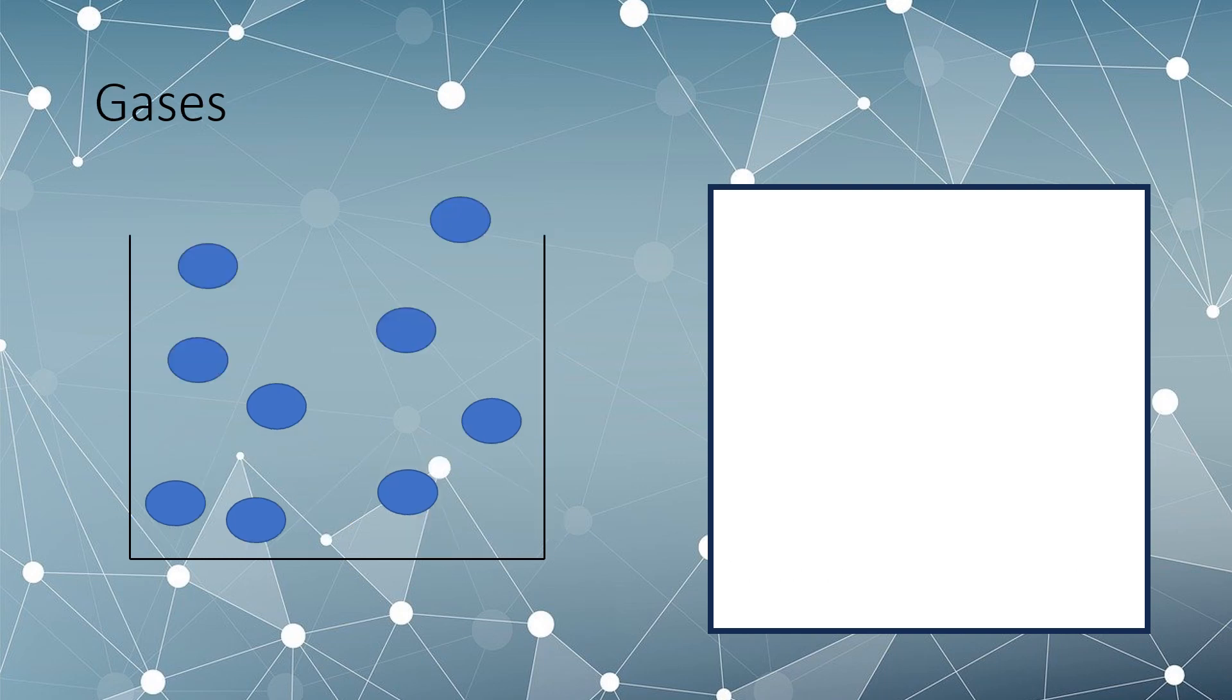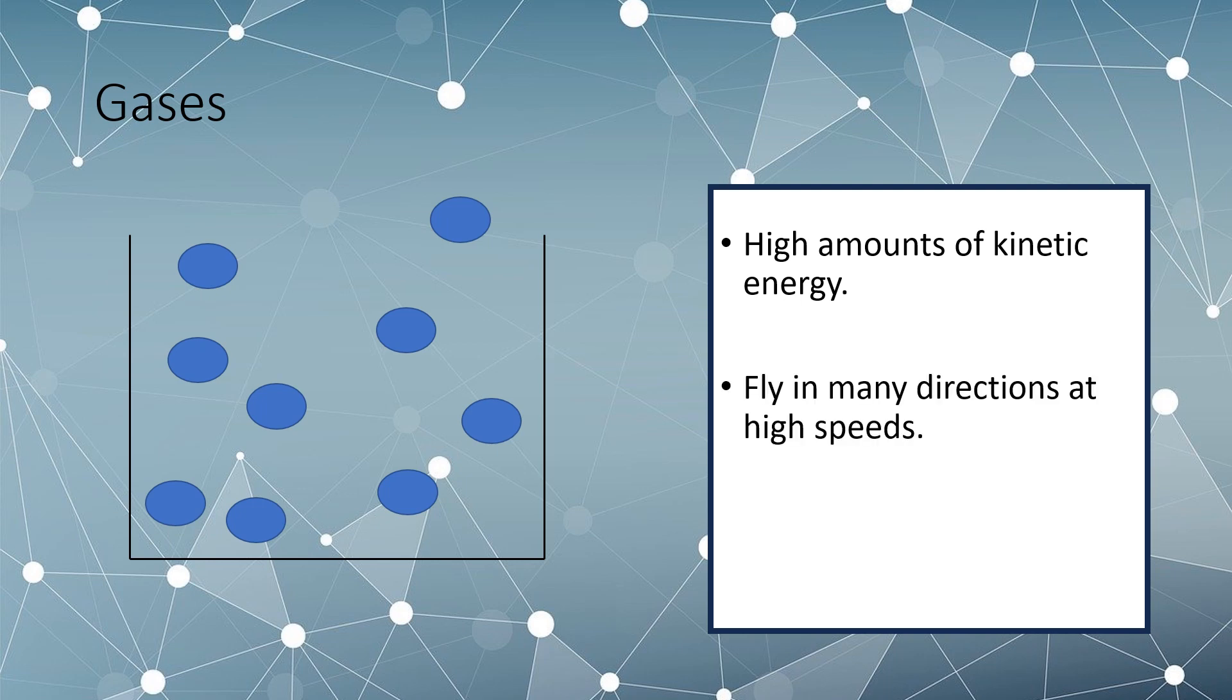Gases and the molecules that make up gases have the most kinetic energy when comparing the three states of matter. This means that the molecules that make up a gas fly in all directions, often with great speed, hence their high energy. Because these atoms and molecules are so far apart, the attractive forces between the individual molecules is insignificant, meaning they are often flying off by themselves.